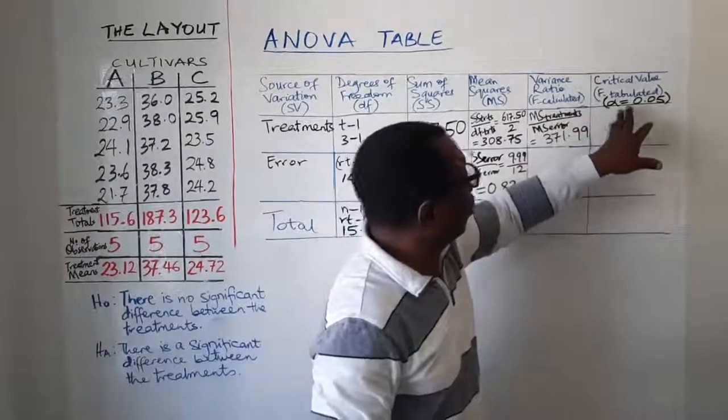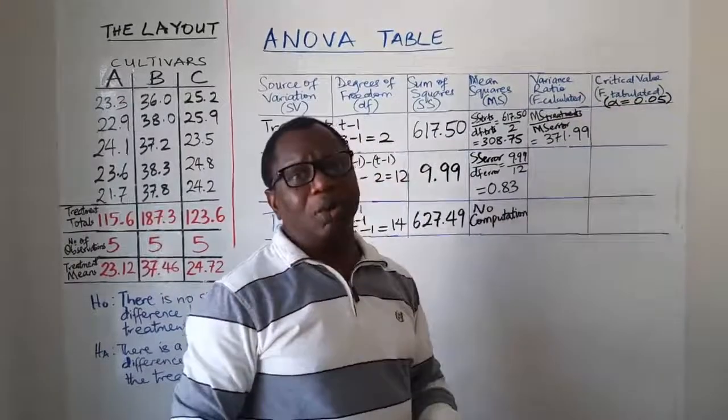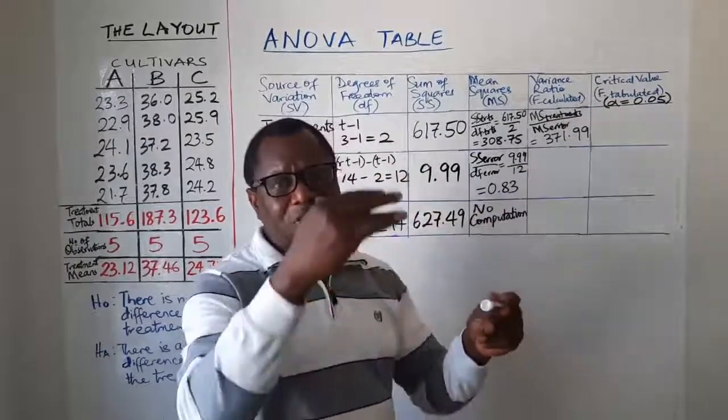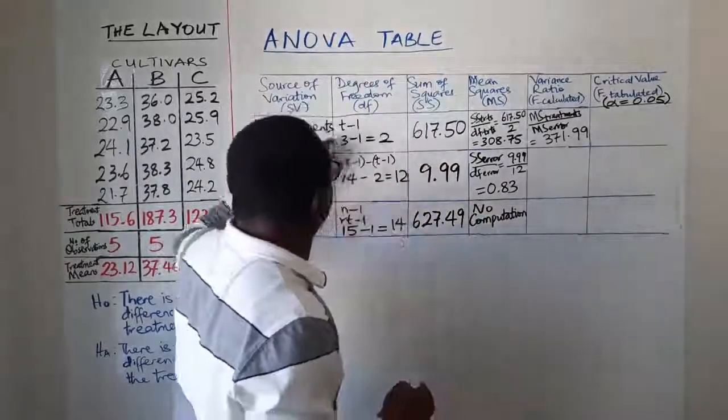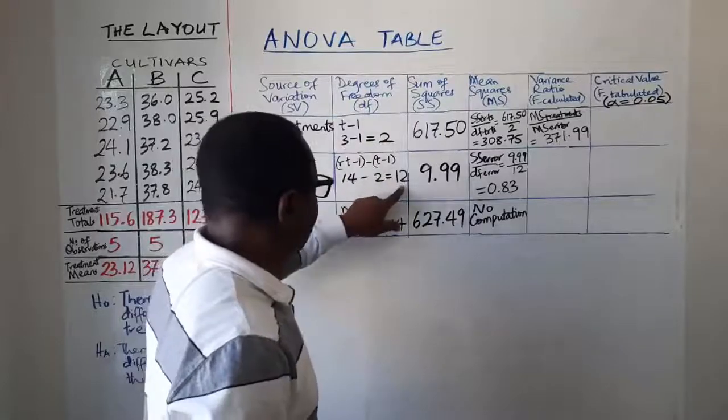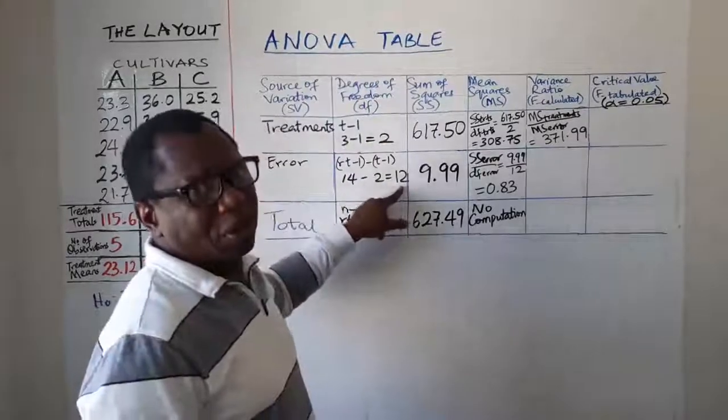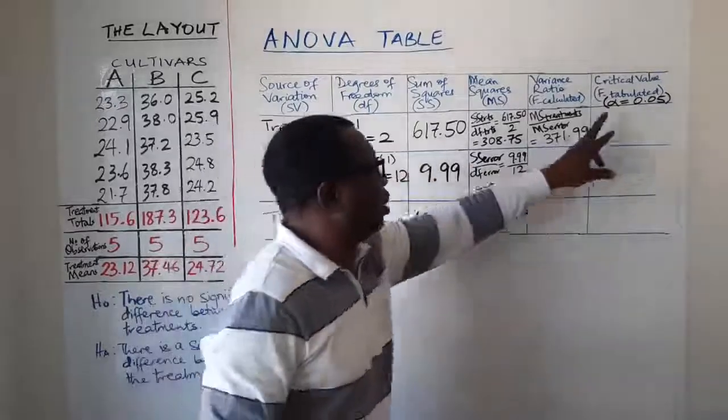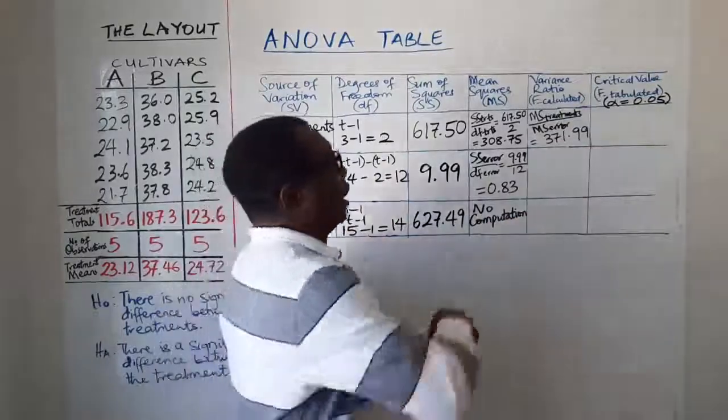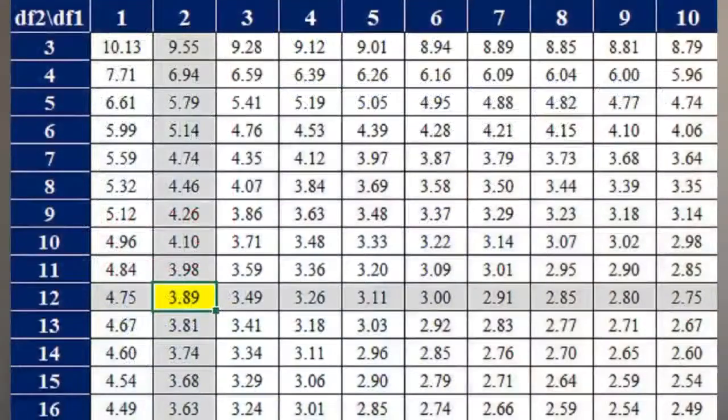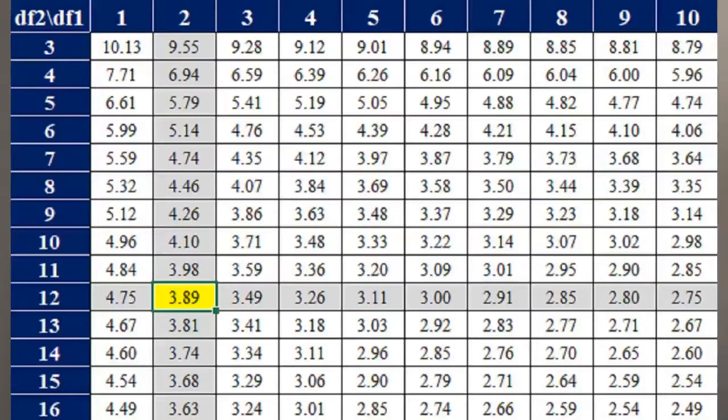I have explained a little more about this in the previous video. Now, how do we obtain that? You go to the table. The table has values, columns and rows. Now the degrees of freedom for treatment is 2. Degrees of freedom for error is 12. So those are the two things you need when you are looking up for the F tabulated value. So what you do is that in the table, you look for column 2 because the table is in rows and columns. So look for column 2, trace it down until you get to row 12.